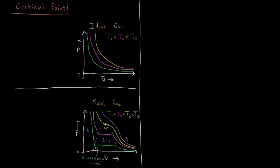In this video we're going to discuss the critical point, which is a very important property for a given gas. Let's start by looking at an ideal gas and we're going to be concerned with the curve of its pressure versus its molar volume. We know that pressure and volume generally tend to have an inverse relationship, and you have the types of curves that we see here according to the ideal gas equation.